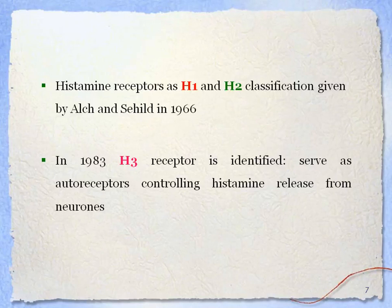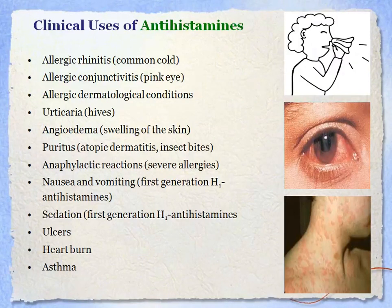Histamine receptors were classified as H1 and H2 by Ash and Schild in 1966. In 1983, the H3 receptor was identified, serving as an auto-receptor controlling histamine release from neurons. Clinical uses of antihistamines include allergic conditions, allergic conjunctivitis, dermatological conditions, ulcers, heartburn, angioedema, anaphylactic reactions, nausea, sedation, asthma, and more.